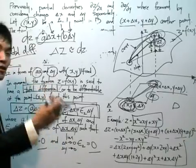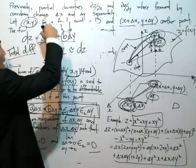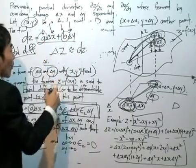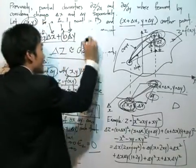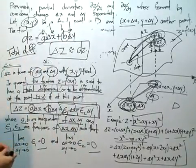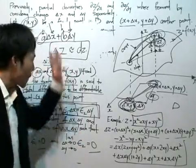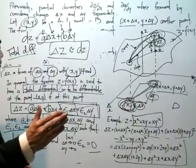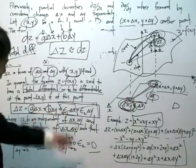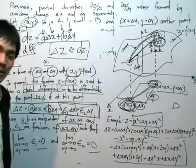And the total differential is also another term. dz is equal to a delta x plus b delta y. And delta z is approximately equals to dz when delta x and delta y are made sufficiently small because it will reduce the percentage error by substituting 0 inside epsilon 1 and epsilon 2.